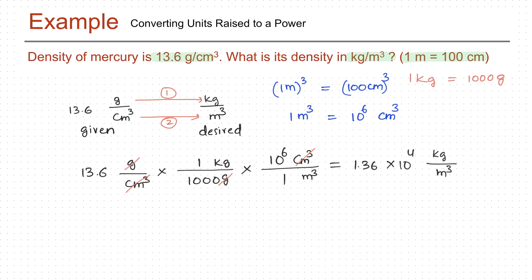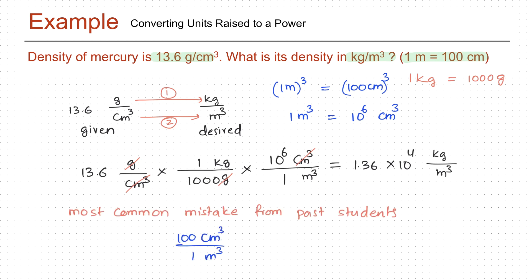One of the most common mistakes students make is to use 100 centimeter cube per meter cube as the conversion factor, which is incorrect — you must cube the equivalence relationship to get 10 to the 6 centimeter cube per meter cube.